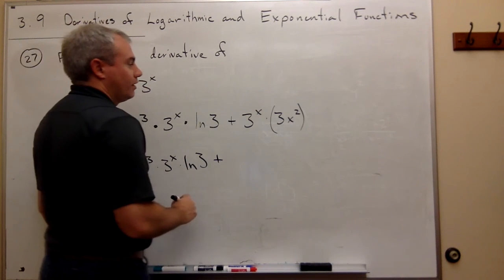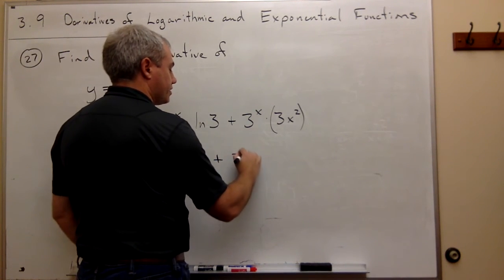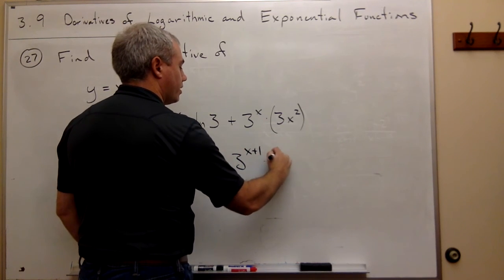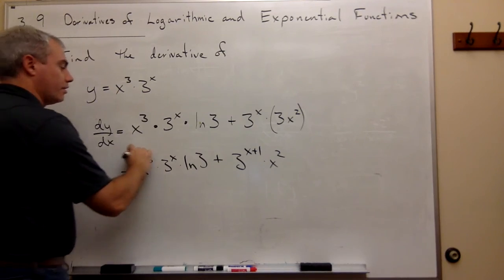Well, there are many ways we could write this, but we could write that this is 3 to the x plus 1 times x squared. And there's my derivative.